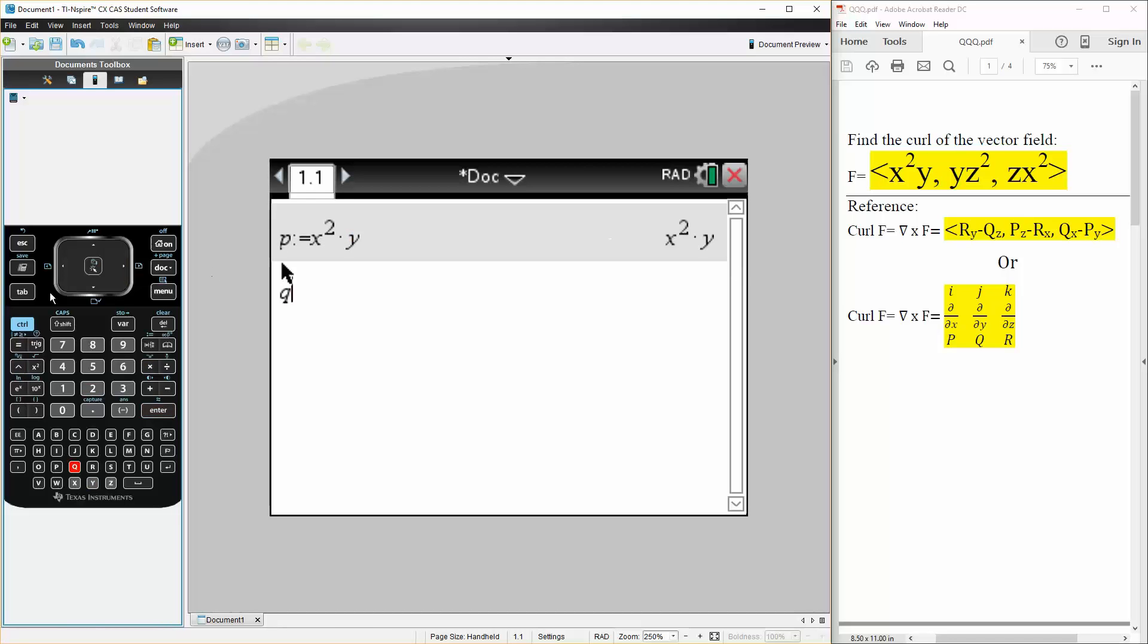Then we do q. q is defined as, it's going to be the middle one, so y times z squared, and then we do r, so r is defined as z times x squared.